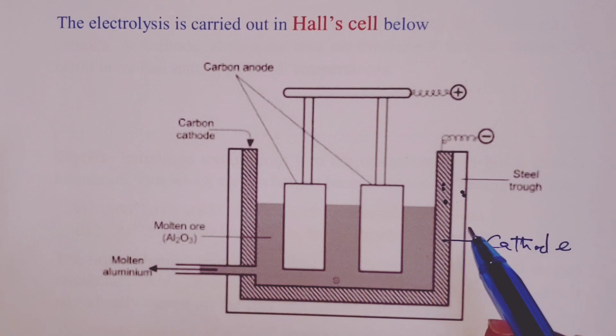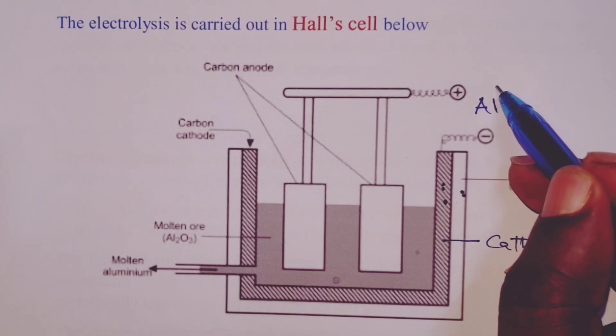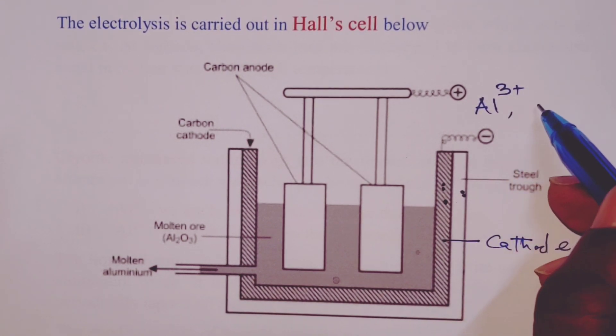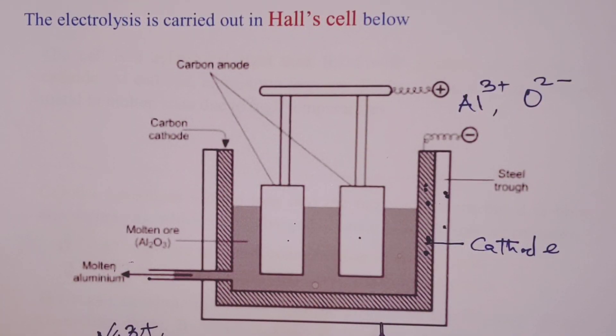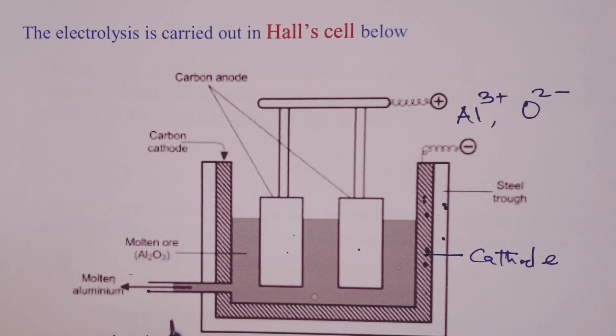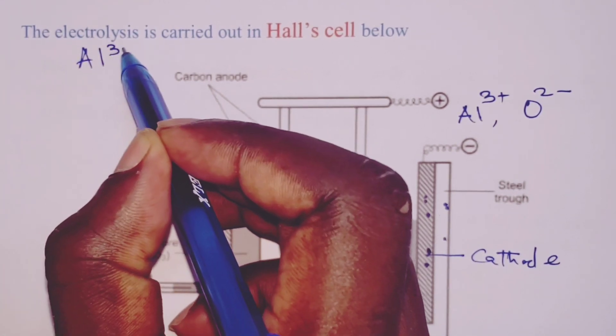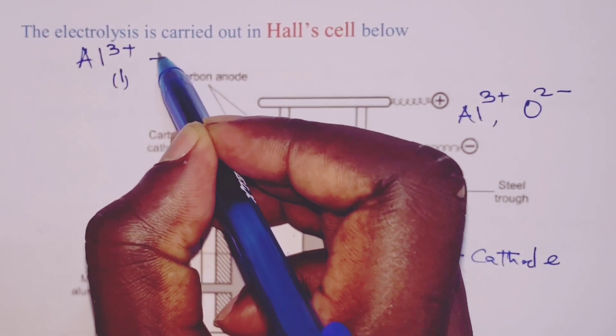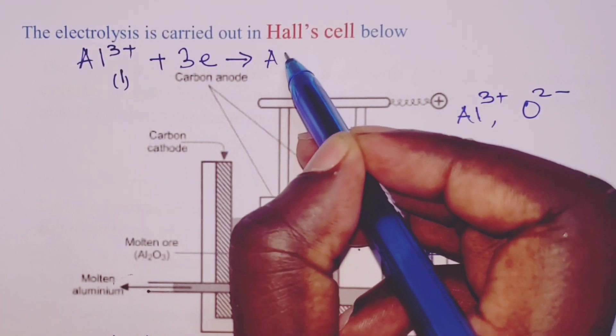We know our electrolyte being molten aluminum oxide will only have two ions: aluminum ions and oxide ions. At cathode, we discharge aluminum ions to form aluminum metal in molten state due to high temperatures. The equation for the discharge of aluminum ions would be aluminum ions in liquid state accepting three moles of electrons and we get aluminum metal.